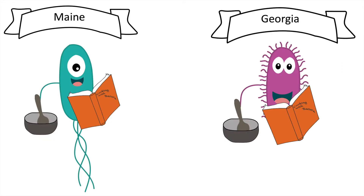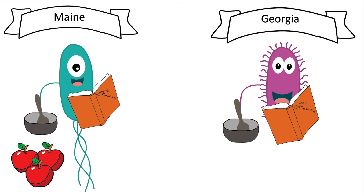If you're in Maine making a pie and your friend is in Georgia making one too, you could use the same cookbook. However, because you're in different places, your recipe would change. You might make an apple pie and your friend might make one with peaches.